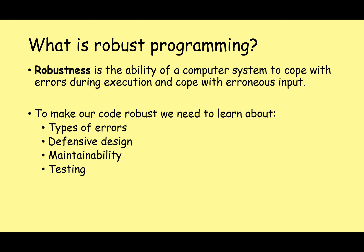Robustness is the ability of a computer system to cope with errors during execution and cope with erroneous input. So to make our code robust, we need to learn about the following things: types of error, defensive design, maintainability, and testing. In this video series I'll cover each of these in turn. Some of these are fairly large topics.